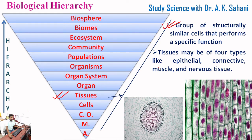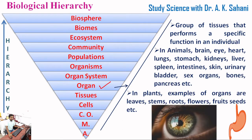The next level is tissues. A group of structurally similar cells that performs a specific function is known as tissue. Tissues may be of four types: epithelial, connective tissue, muscle, and nervous tissue. The next level is organ — a group of tissues that performs a specific function in an individual is known as an organ.